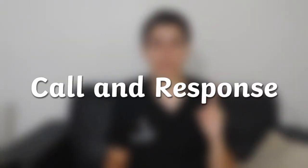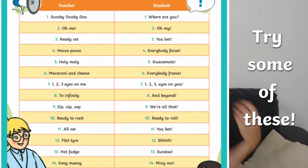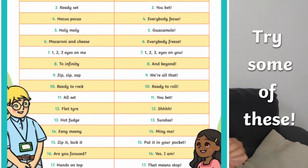Idea number one is call and response. You can use clapping patterns for a class to repeat back, like this. I loved this strategy when I was a child because I thought it was fun to try and mimic it back every time — a little bit of a challenge. You can also come up with a call and response of your own. This can be something quirky or silly, or really simple — whatever you like and whatever suits you and your class.